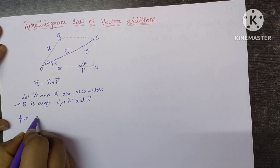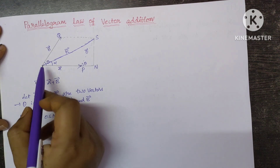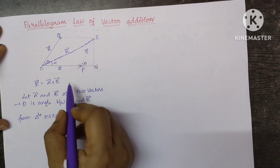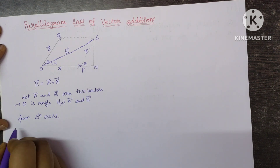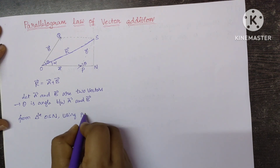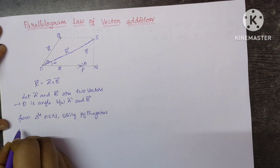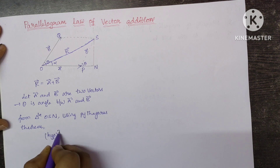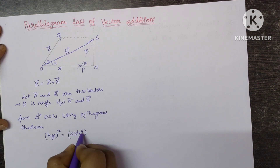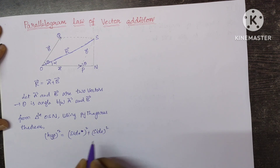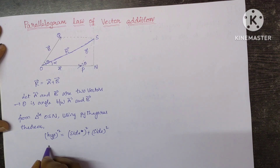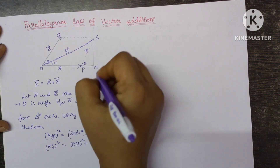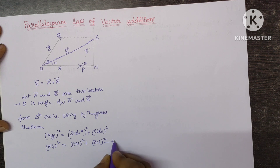Now, from triangle O, S, N — this is a right angle triangle, so we can use Pythagoras' theorem. Using Pythagoras' theorem, hypotenuse squared equals side squared plus side squared. Here the hypotenuse is OS, so OS² = ON² + SN². Let this be equation number 1.